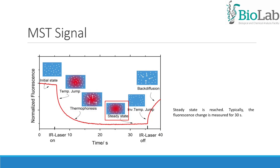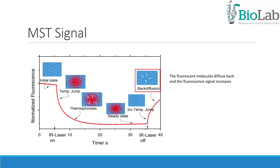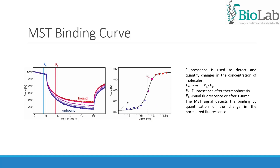Steady state is reached; typically the fluorescence change is measured for 30 seconds. After deactivation of the infrared laser, an inverse T-jump occurs and the solution cools down. The fluorescent molecules diffuse back and the fluorescence signal increases. For analysis, the change in MST signal is expressed as the change in normalized fluorescence, delta-F norm, defined as F1 divided by F0. Titration of the non-fluorescent ligands results in a gradual change in MST, which is plotted as delta-F norm against the ligand concentration to yield a dose-response curve that can be fitted to derive binding constants.